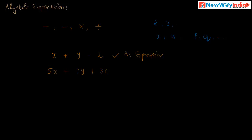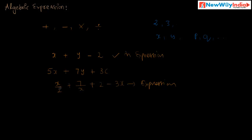These terms — literals, constants, and variables — are connected by multiplication and addition. Consider another example: x divided by 2, plus 7 divided by x, plus 2 minus 3x. Here the literal and constant are divided, and these are connected by the fundamental operations addition and subtraction. This is called an expression.